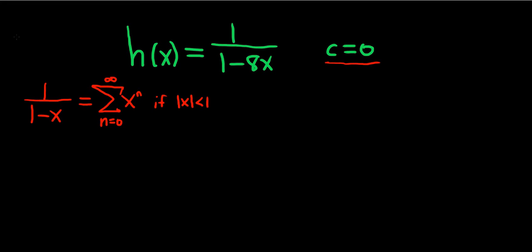So let's go ahead and go through this problem very carefully. We have h of x, and that's equal to 1 over 1 minus 8x. And so this whole piece here, this 8x, is like our x here in this formula.